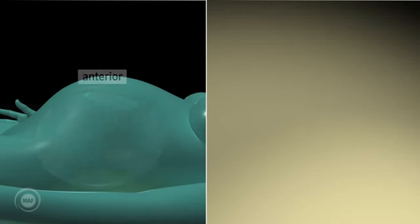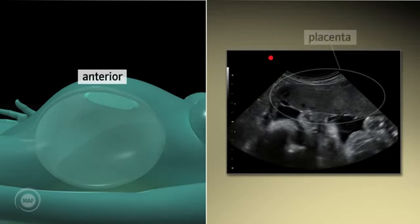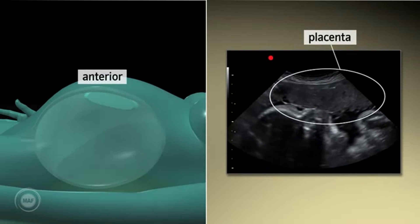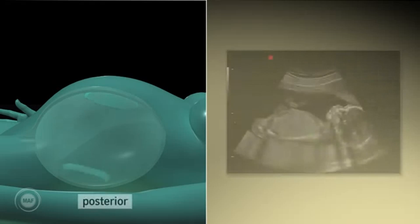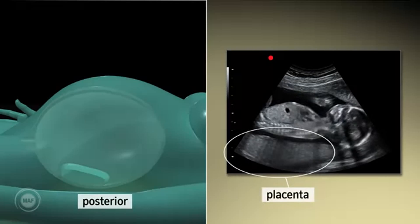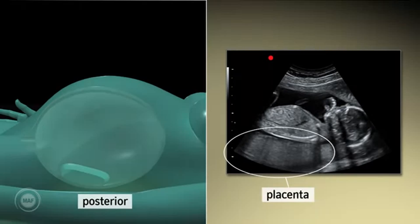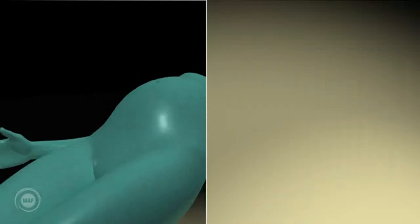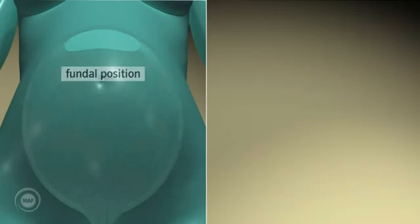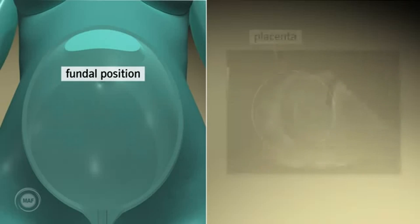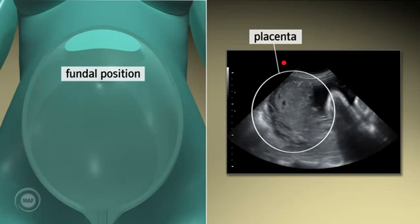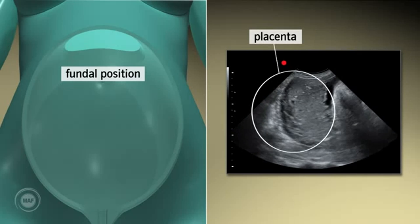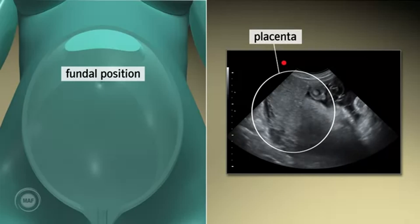Anterior and posterior positions. Scanning in the longitudinal or the transverse plane, the anterior placenta will always be at the top of the screen and the posterior placenta will always lie at the bottom of the screen. Fundal position. Scanning in the longitudinal plane, the fundal placenta will be displayed on the left side of the screen.